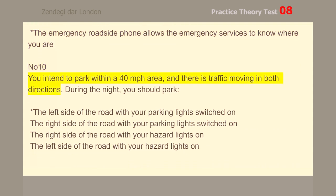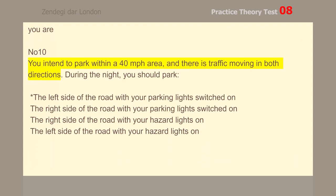Number 10. You intend to park within a 40 mph area, and there is traffic moving in both directions. During the night, you should park on the left side of the road with your parking lights switched on.